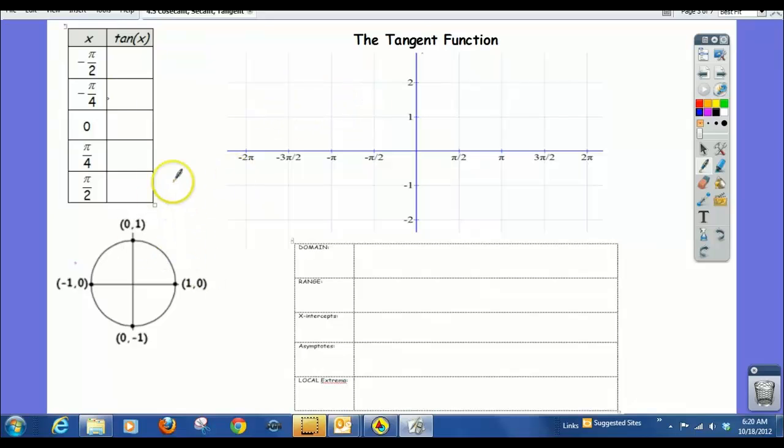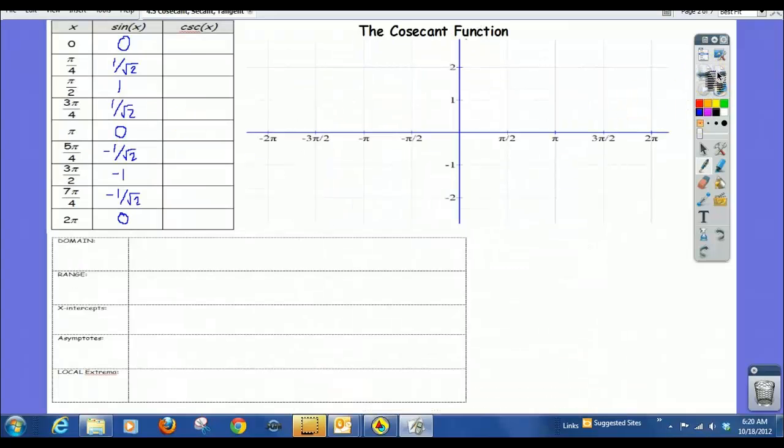So here's what we're going to do. I've got a table here. I've got some x values and then the tangent values. Now what I want to draw your attention to is, I chose the x values to do the tangent graph, starting at negative pi over 2 and then going up to pi over 2, which is different from when we did the sine, cosine, and the cosecant and secant graph.